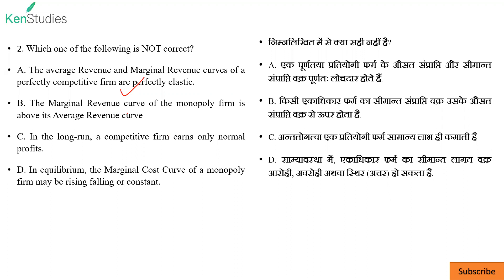Next: marginal revenue curve of the monopoly firm is above the average revenue — नहीं. यह suppose average revenue है AR, तो marginal revenue below होगा, above नहीं, below होगा. तो यह आपका B गलत हो गया, तो answer हमारा B ही हो गया।